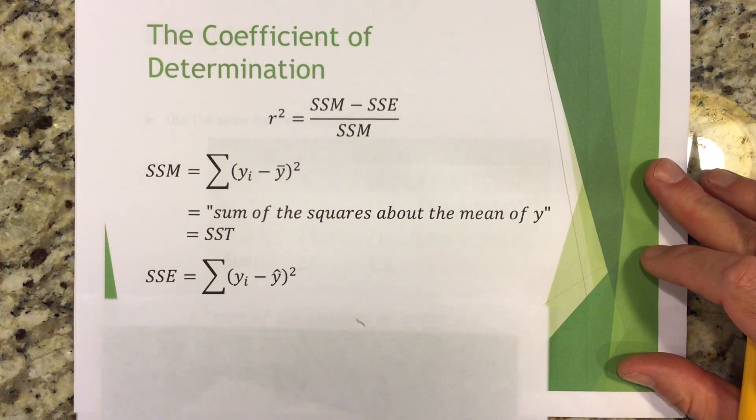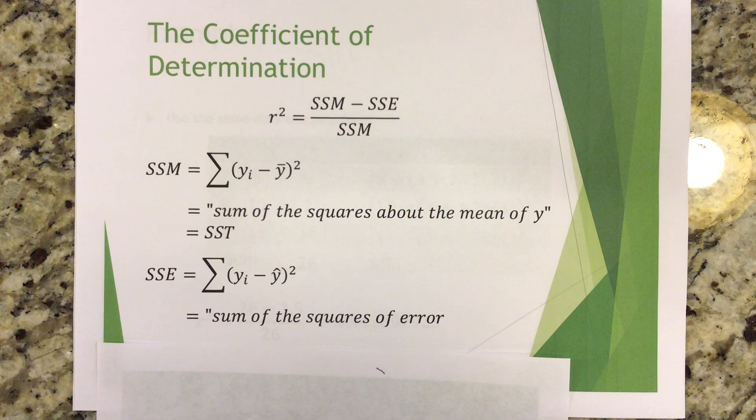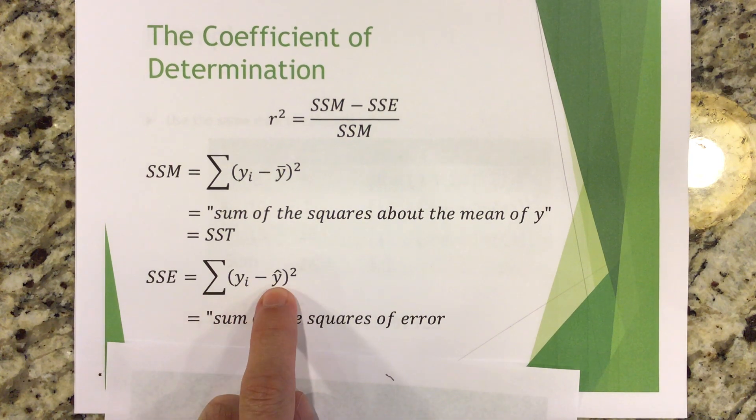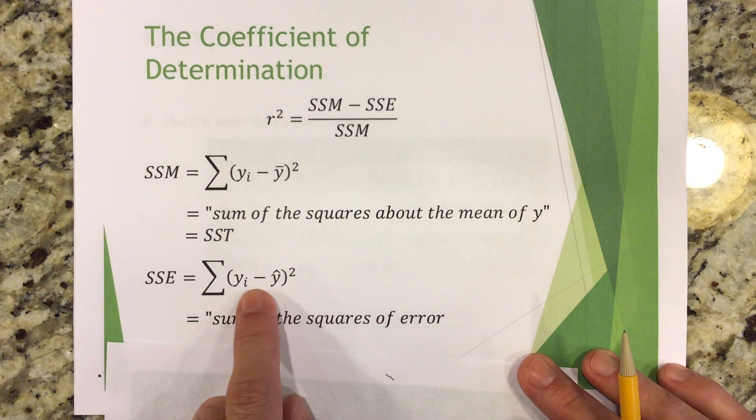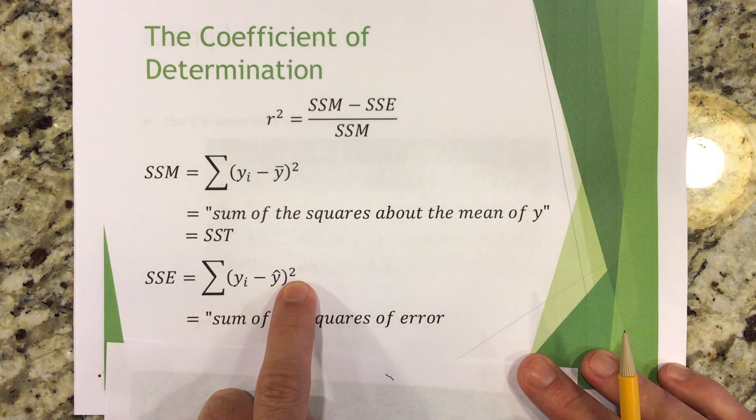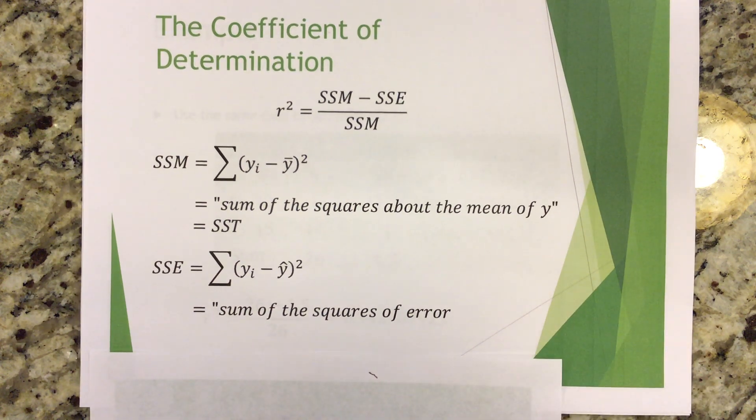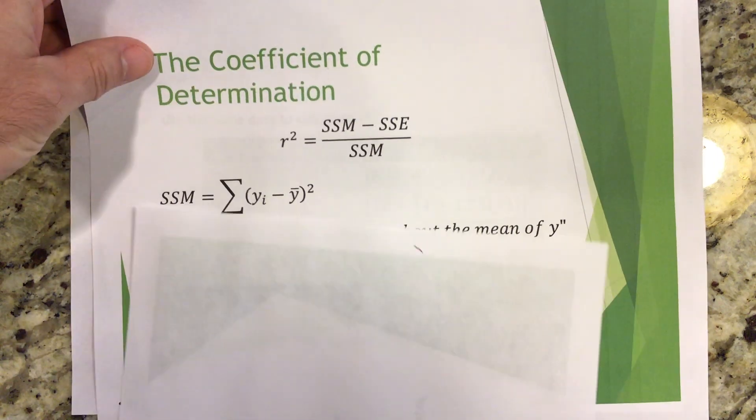All right. Here's SSE, sum of the squares of error. And again, you start by taking each Y coordinate one at a time and then you subtract away the predicted Y coordinate, right, the Y coordinate from the line that you created, the least square regression line. Those are the errors. So, you're finding the errors, you're squaring them, you're taking their sum and that's why we call it sum of the squares of error. So, let's just do that first one by hand. Actually, we'll do the whole problem. Let's do the whole problem. So, we're going to use the same data and we're going to calculate R squared.